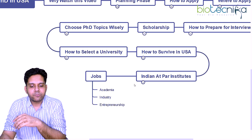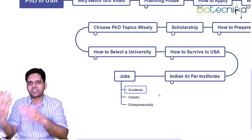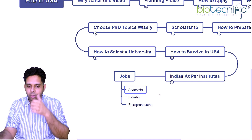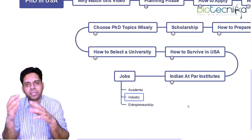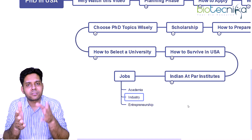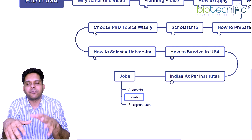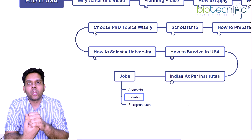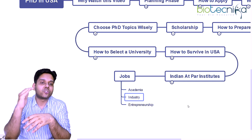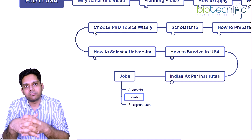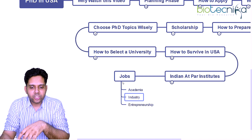What kind of jobs will you get after your PhD? In academia, you can get postdoctorate or assistant professor positions in the USA or India. In industry, there are scientists, principal scientists, and application scientists — I've already discussed these in previous videos. Of course, you also have a chance of starting your own company or becoming an intrapreneur, sitting at a high-level position in big companies.